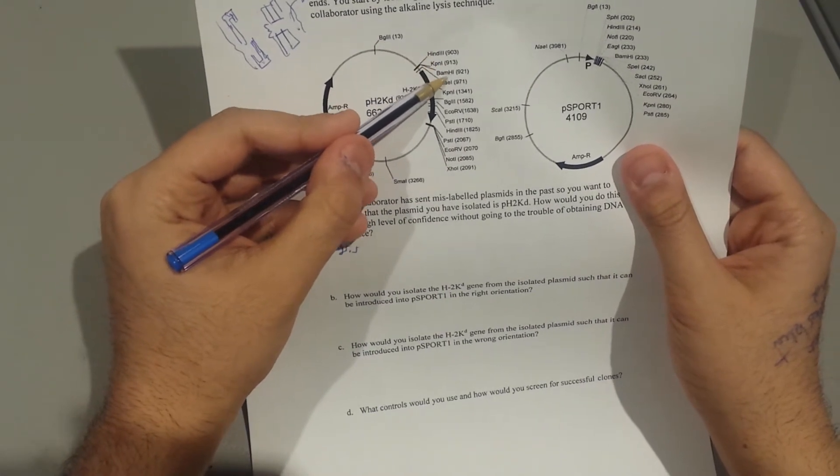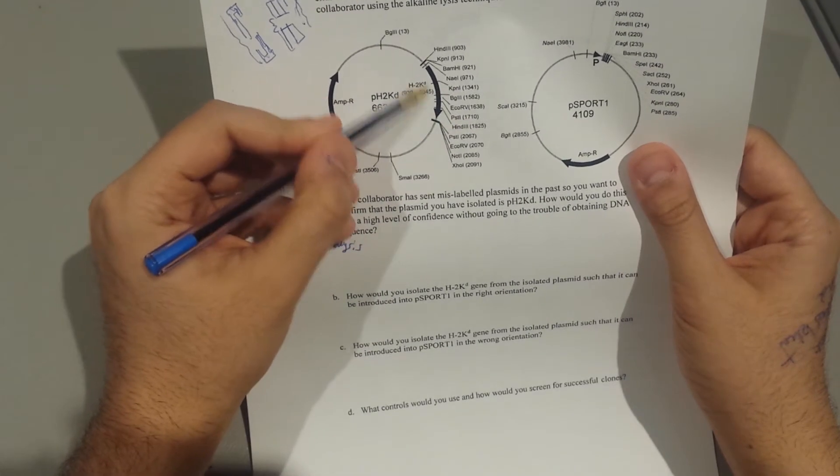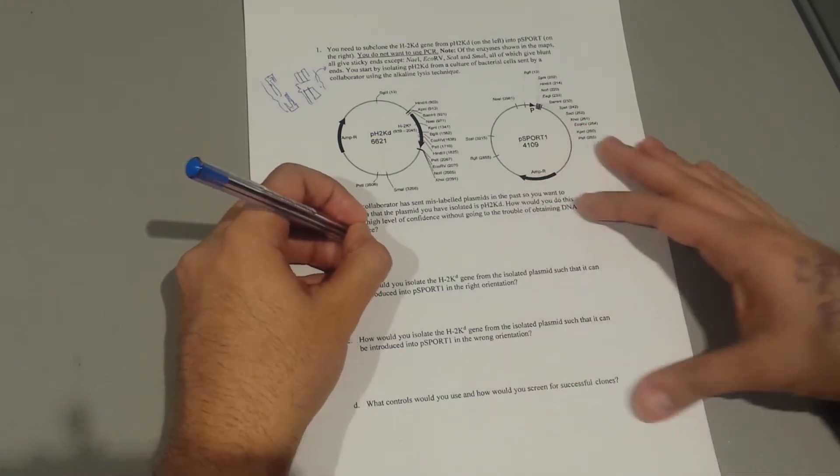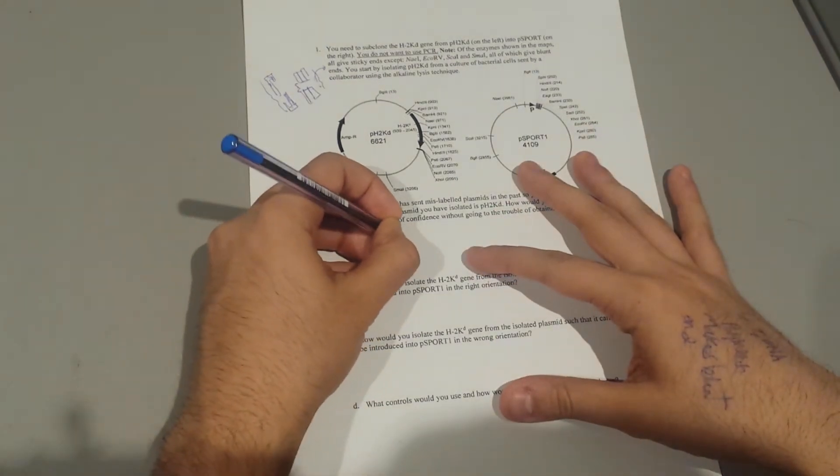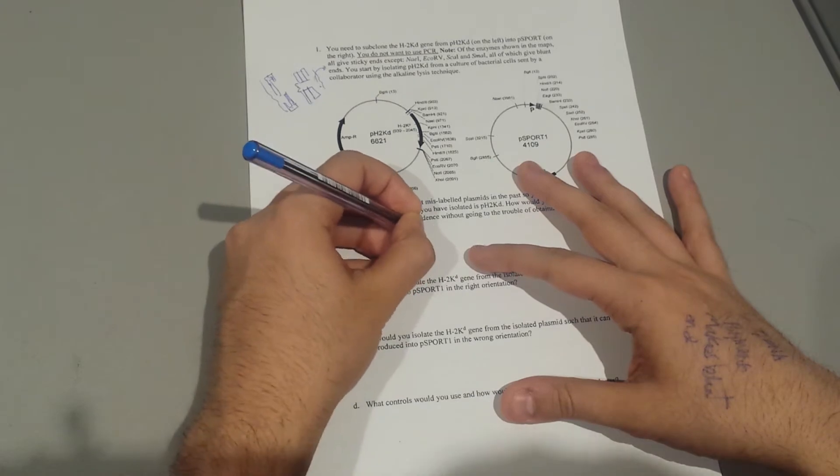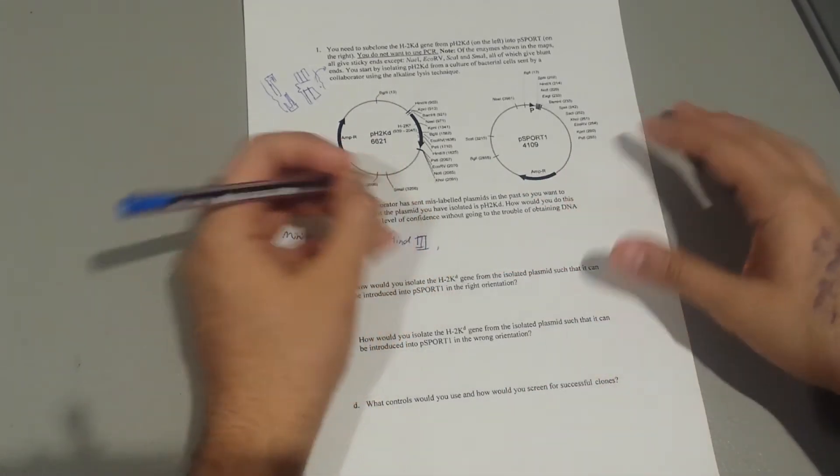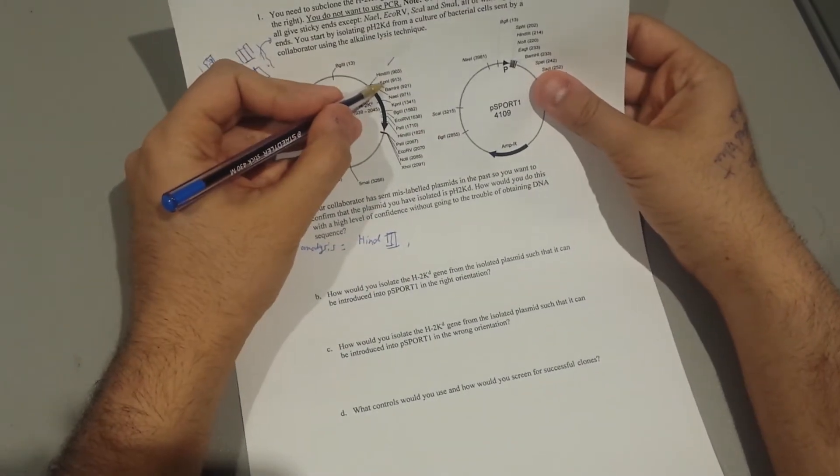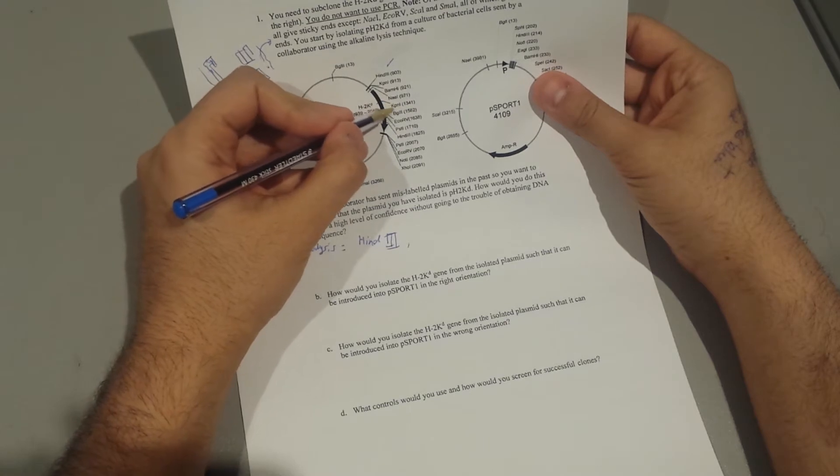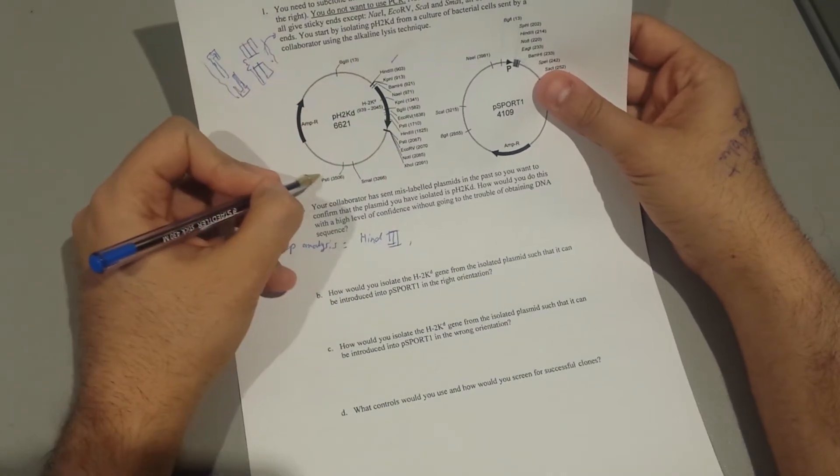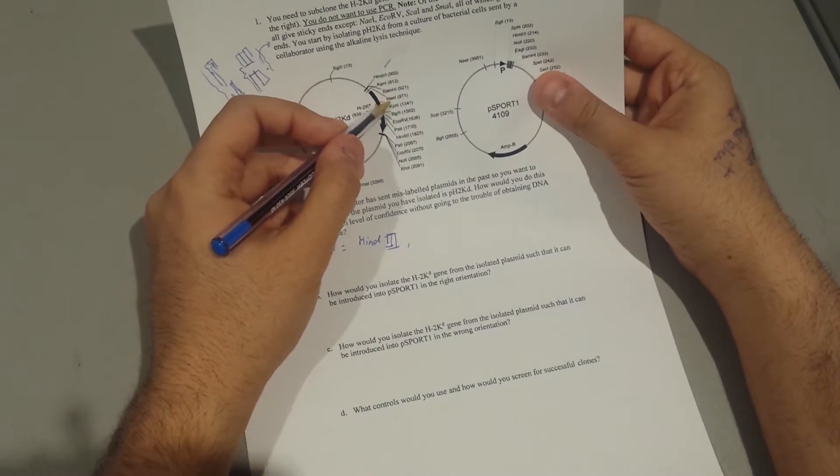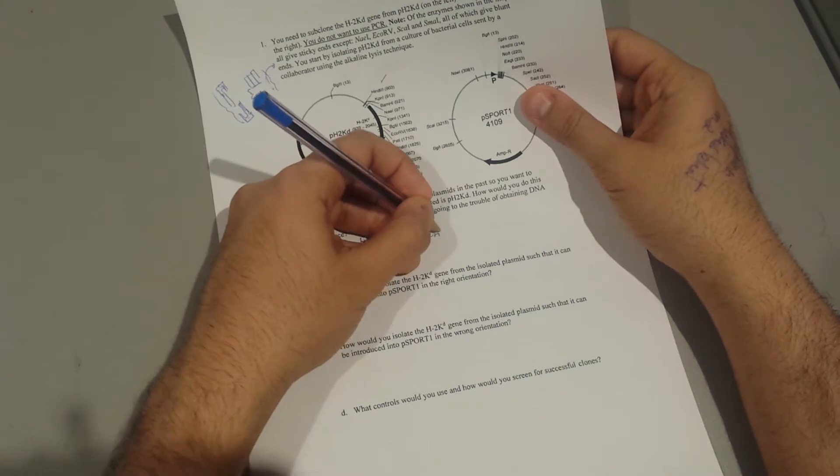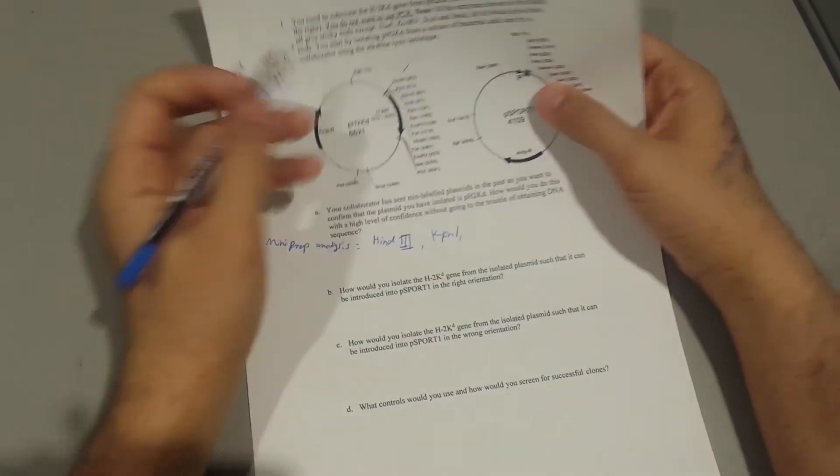Let's start with HindIII. See, there is one HindIII there, there is one HindIII there. The first one would be HindIII. Next one, let's see, KpnI. See, there's another one there, so there's two sites again, we're going to use that. So there would be KpnI.